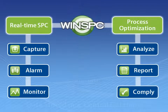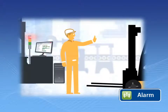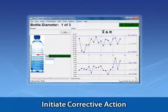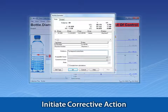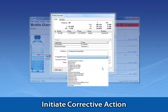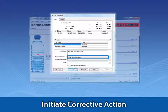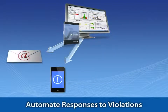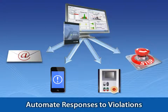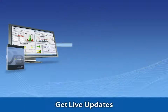Alarming refers to WinSPC's real-time response when a process violates a condition, such as a control limit test. You can configure WinSPC to trigger multiple visual and automated responses, including displaying an out-of-control indicator or corrective action prompt, alerting supervisors by email or other means, adjusting or shutting down a machine, and communicating updates with other systems.